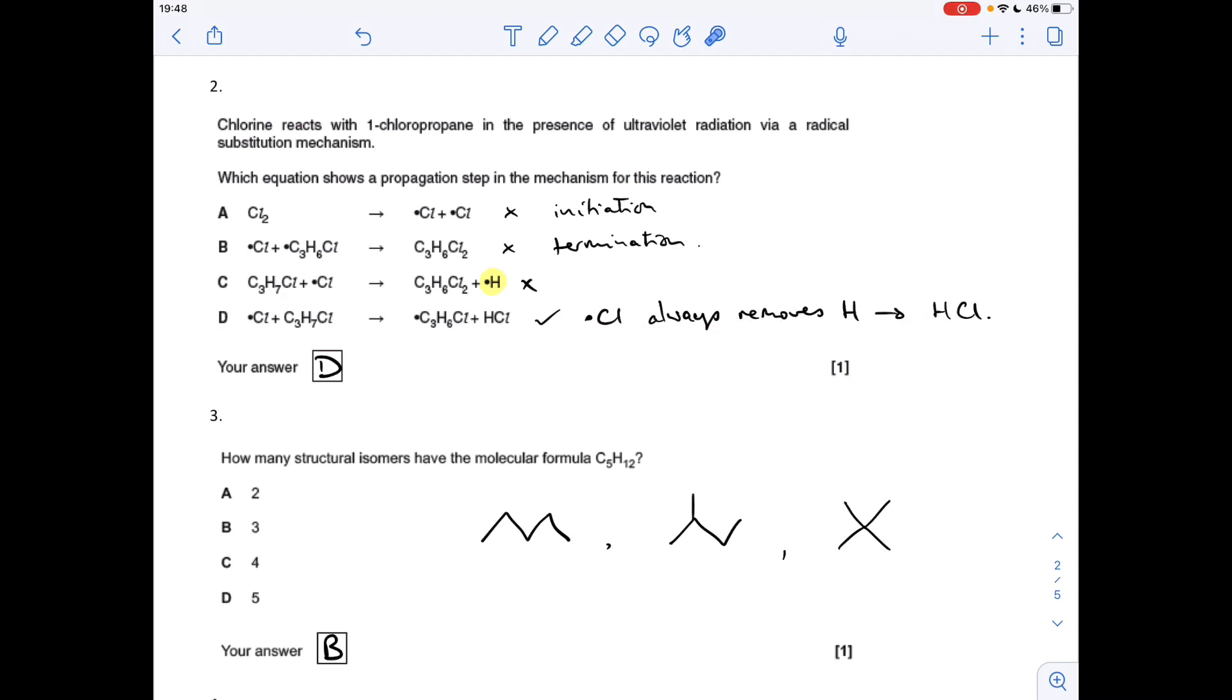How many structural isomers have the molecular formula C5H12? I would just draw them out. Obviously you've got the chain of five, reduce the chain to four with a branch on—that branch can only go there because if you put it there you've got the same molecule—and then reduce the longest chain to three with two methyl groups. So B was the answer: three possible structural isomers.